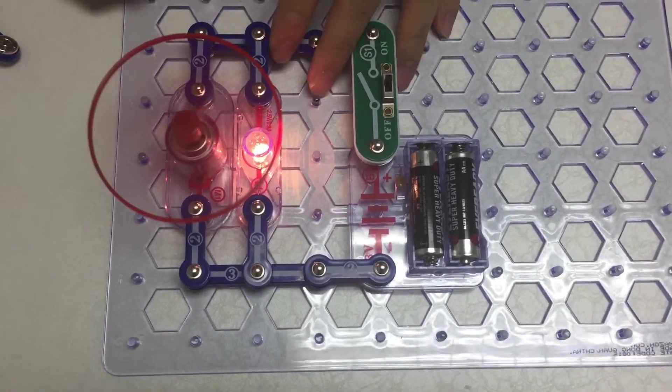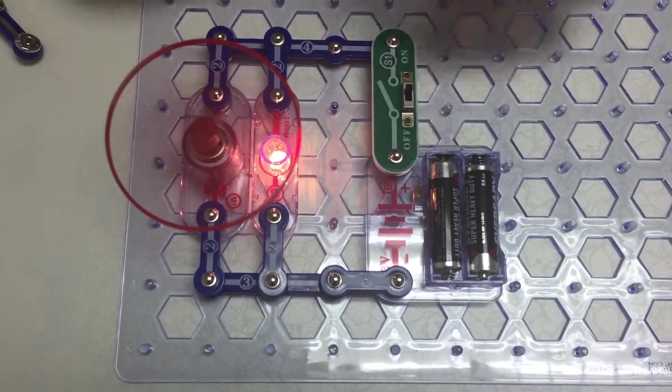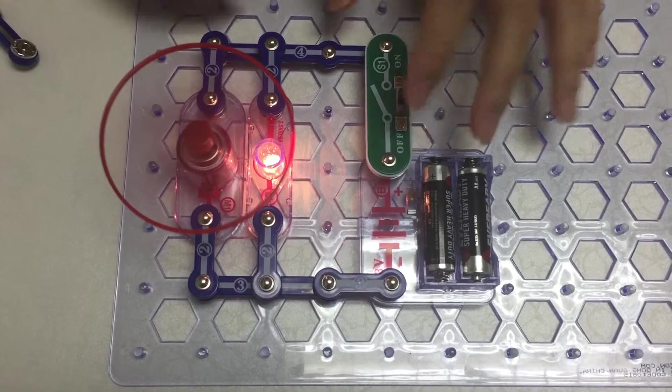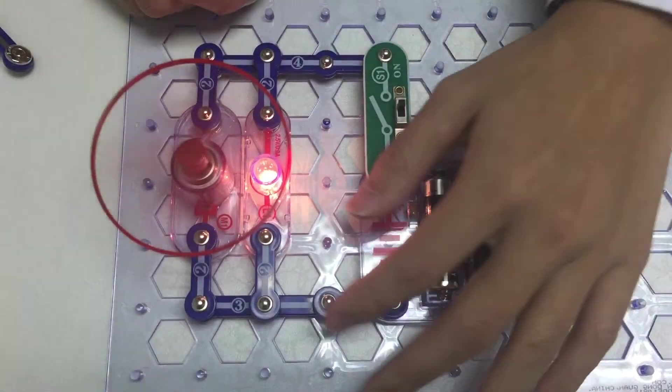Notice that for the parallel circuit, the lamp is brighter and the motor is faster. This is because in a parallel circuit, the resistance is lowered.